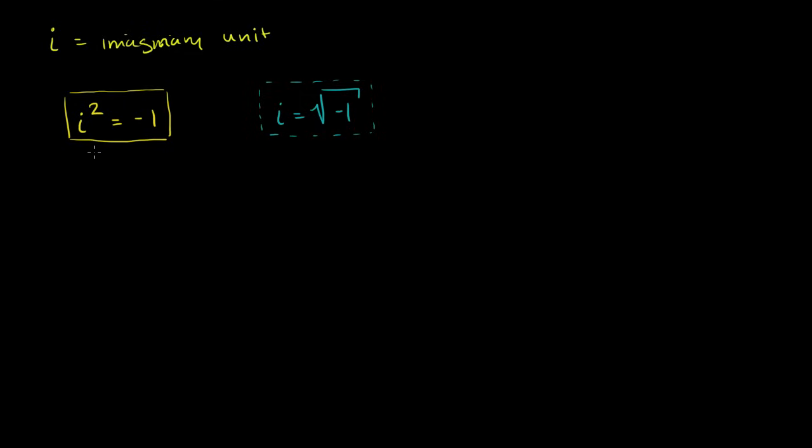Now, with this definition, let's just think about what the different powers of i are. Because you can imagine, if something squared is negative 1, if I take it to all sorts of powers, maybe that should give us all sorts of weird things. And what we'll see is that the powers of i are kind of neat, because they cycle through a set of values.